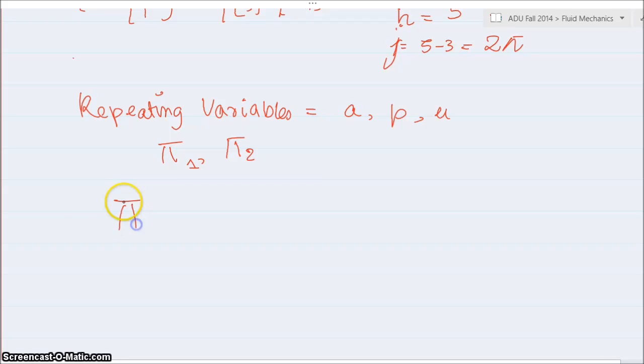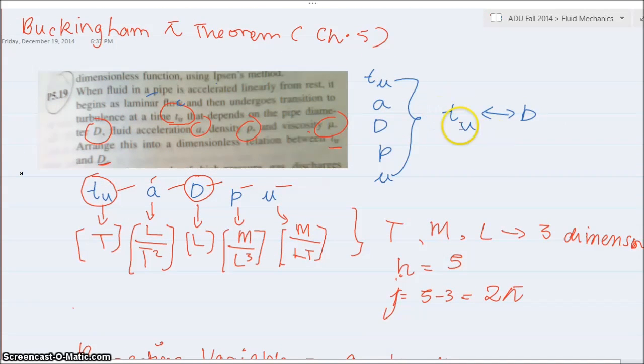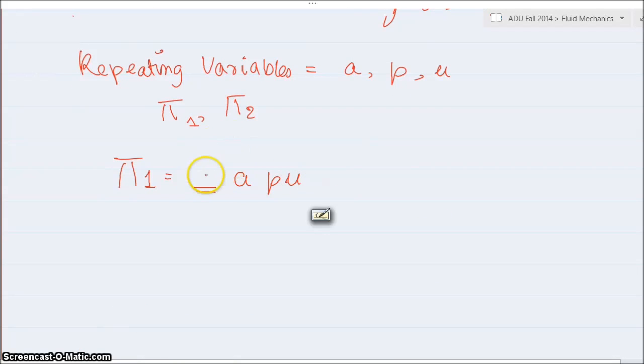So, for my pi1, I choose one extra variable and A, rho, mu. And this extra variable will be the first one that they ask in the question, which is T_u. So, this will be one of my target to find. So, I'll be putting this target in my first equation. So, this will be T_u. And, I'll put the power of this T_u as one. And, acceleration, I'm going to put the power of accelerations A, B, and C, since I don't know what is the number on them.